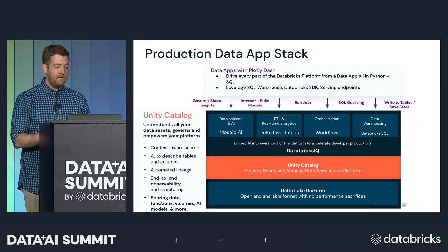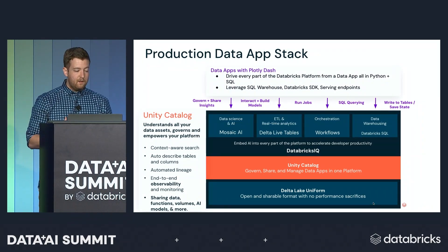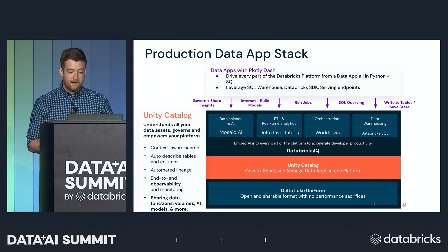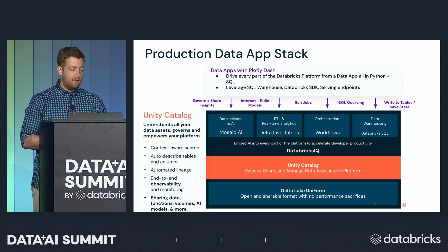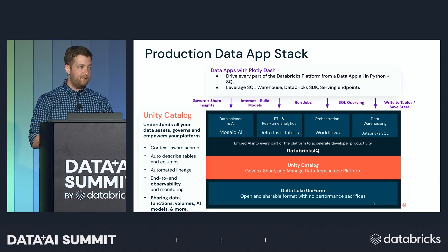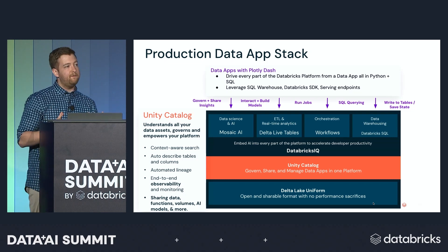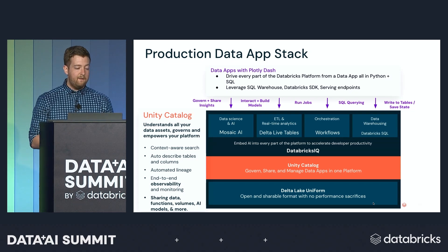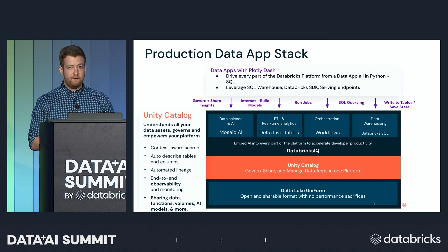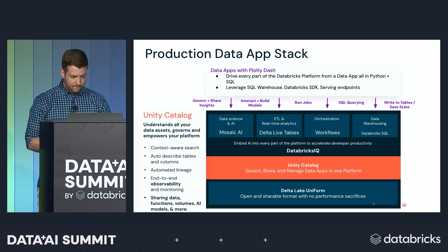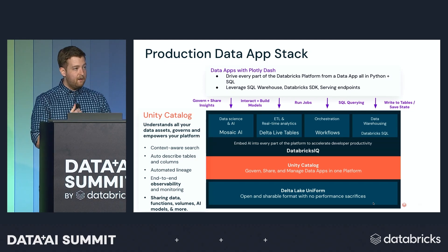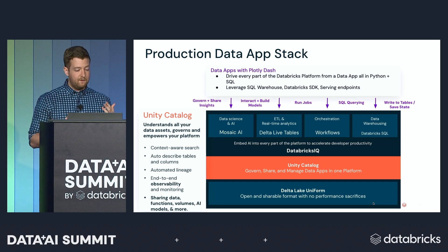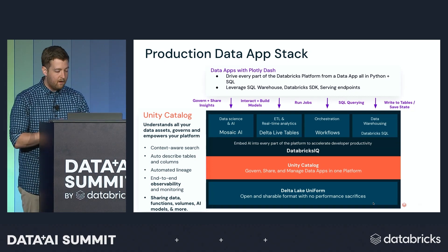Overlaying the application layer into the stack, Unity Catalog becomes the critical juncture and key point in doing apps on Databricks with Dash. With Unity Catalog, you can automatically create and manage resources — the app can create its own self-governed container for the data tables, context, functions, and models that it needs. The app layer can interact with all of those pieces with the Databricks SDK and the SQL connection. So the app can govern, create resources, build models, run jobs, do SQL querying, and read and write table data all in one place.